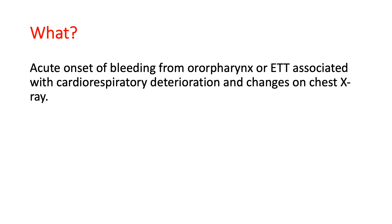So what is pulmonary hemorrhage? It's actually an acute onset of bleeding from the oropharynx or the endotracheal tube that's associated with cardiorespiratory deterioration and changes on chest x-ray.